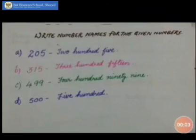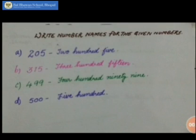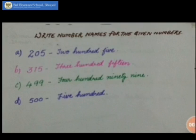You have done numbers up to 200. Now from the second chapter we are going to do numbers above 200. We are going to write the numbers here and the number names for them. There are 4 examples. The first number is 205. A number is also known as a numeral.